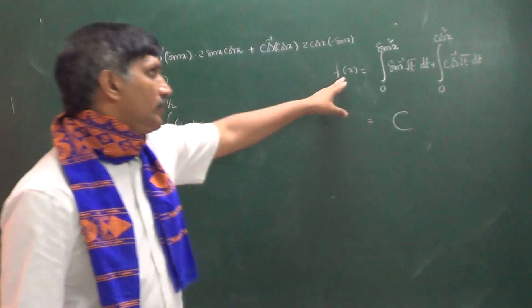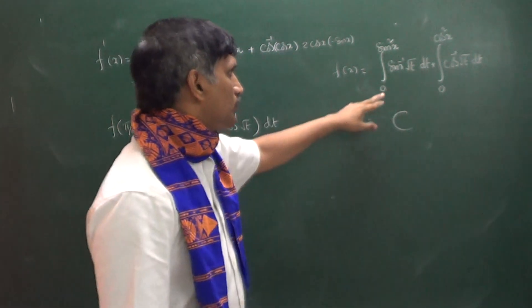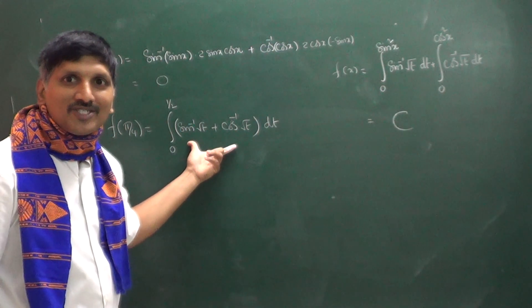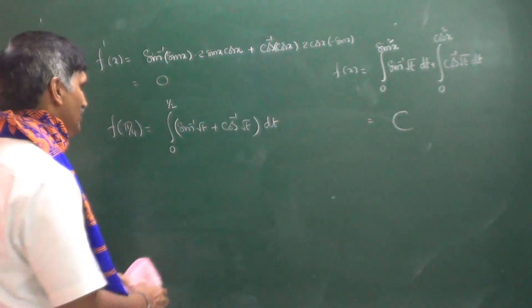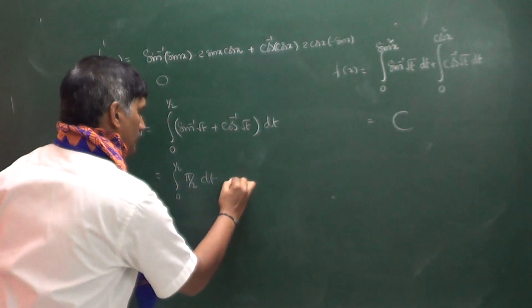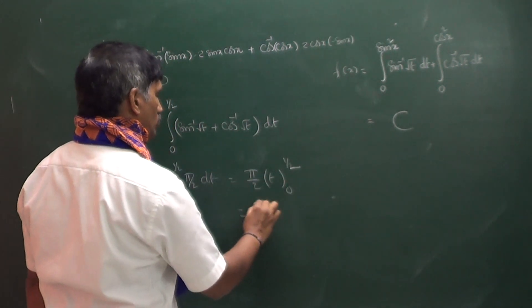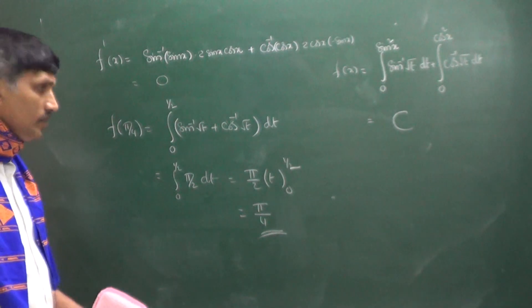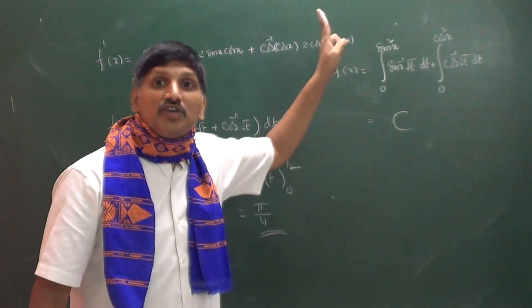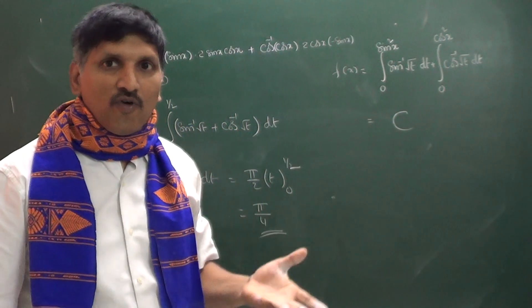This is f(x) evaluated at x = π/4, so wherever x appears I write π/4, giving limits 0 to 1/2 for both integrals. Using sin⁻¹(√t) + cos⁻¹(√t) = π/2, we combine them into the integral from 0 to 1/2 of π/2 dt. This equals π/2 · t evaluated from 0 to 1/2, which gives π/4. Since f(x) is constant and f(π/4) = π/4, the value of f(x) is π/4.